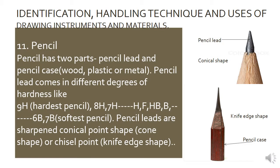Pencils have two parts: the pencil lead and the pencil case. The case can be made of wood, plastic, or metal. The pencil lead comes in different degrees of hardness — from 9H (the hardest) down through 8H, 7H, to H, then F, HB, B, down to 6B and 7B (the softest). The H grade is hard; the B grade is soft. Pencil leads are sharpened to either a conical point shape or a chisel point shape.